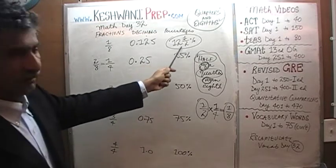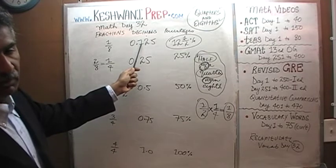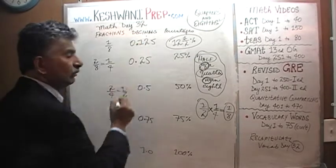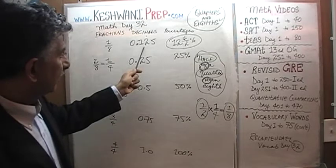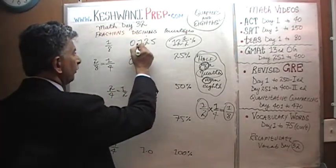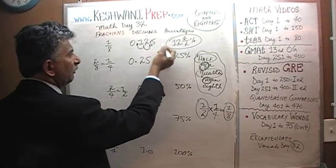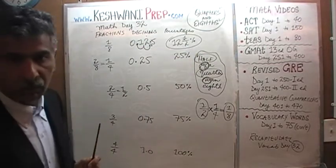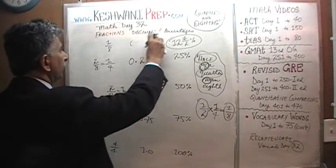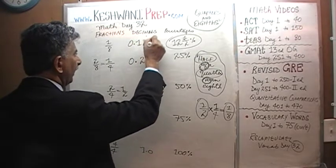It's 0.125 because when we convert to percentage, we multiply by 100 and the decimal point moves two places — giving us 12.5%. So one eighth is 12 and a half percent in percentage form and 0.125 in decimal form.